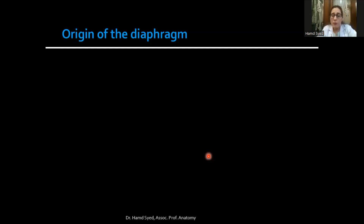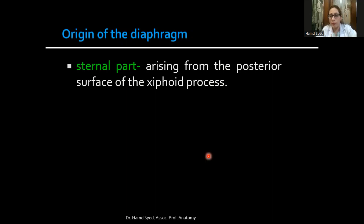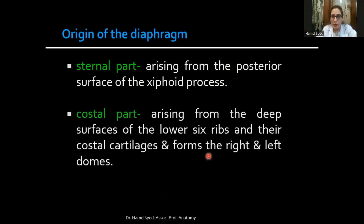The diaphragm has its origin in three parts. First is the sternal origin — from the posterior surface of the xiphisternum in the form of two fleshy slips. This is the highest point of origin and may not always be present. The costal origin is from the deep surfaces of the lower six ribs and their costal cartilages, and this forms the right and left domes of the diaphragm.